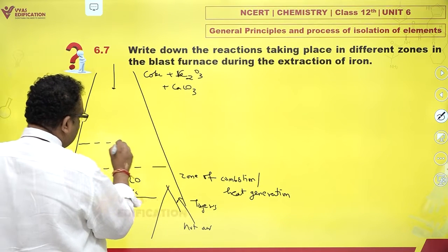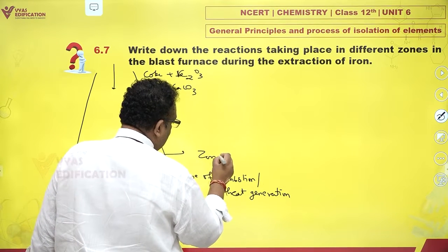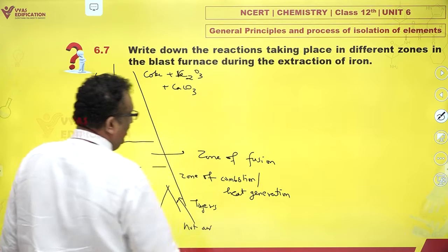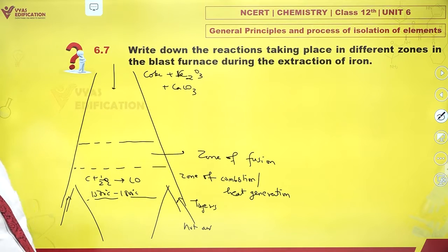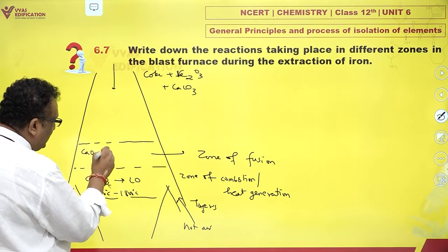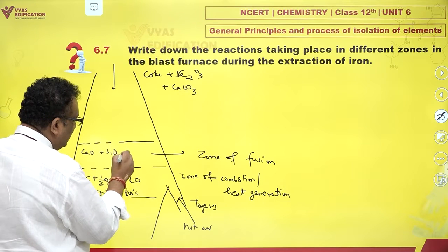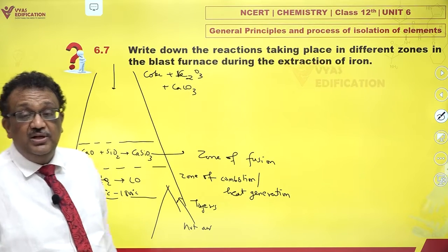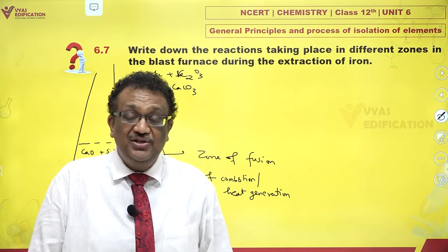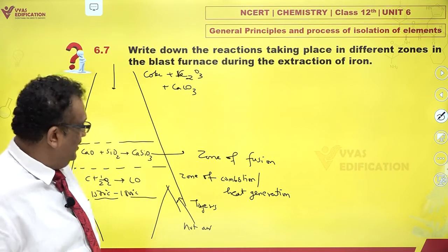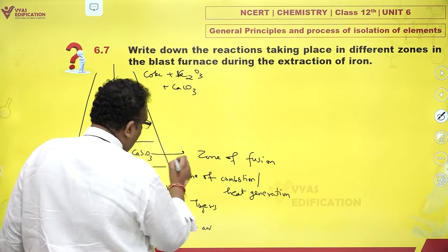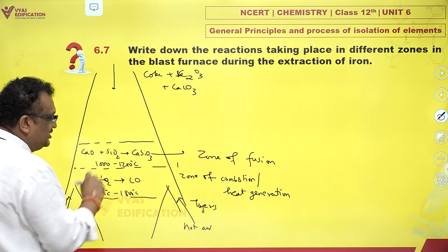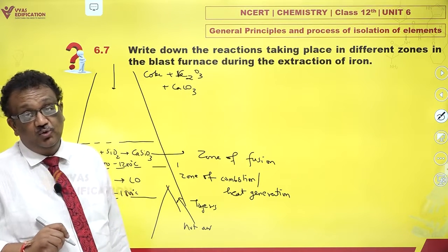Just above this you have the zone of fusion. In this zone, calcium oxide reacts with the impurity silica to form calcium silicate. Calcium silicate has a melting point of barely 1200 degrees Celsius, so it melts very easily. This zone is roughly 1000 to 1200 degrees Celsius — that is the temperature range of the zone of fusion.